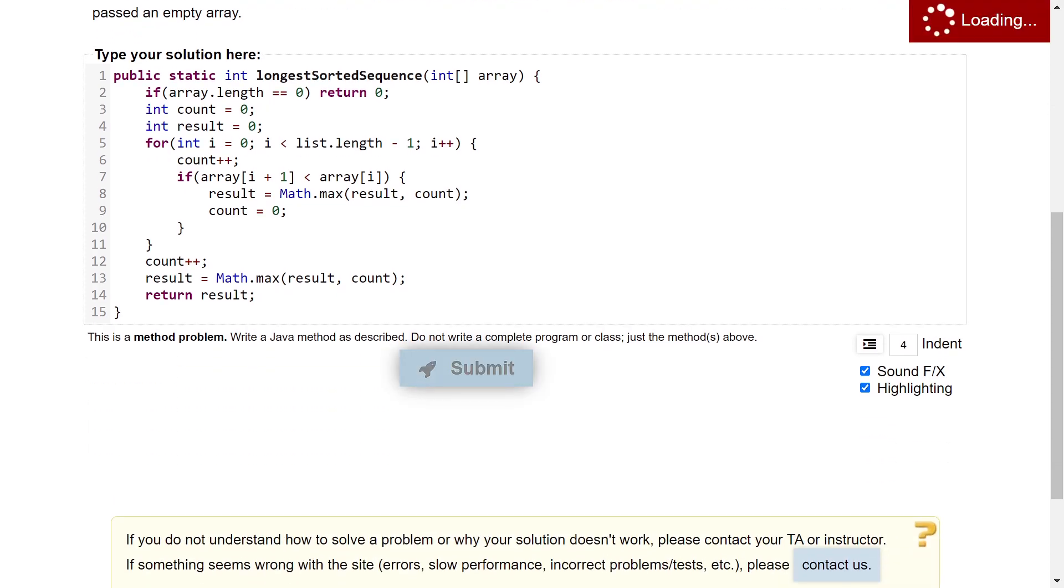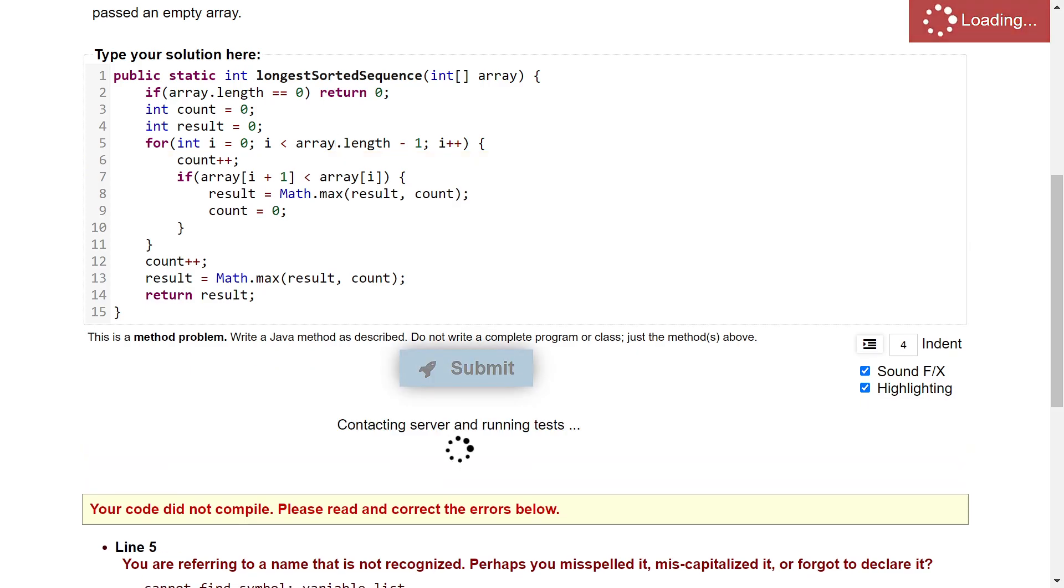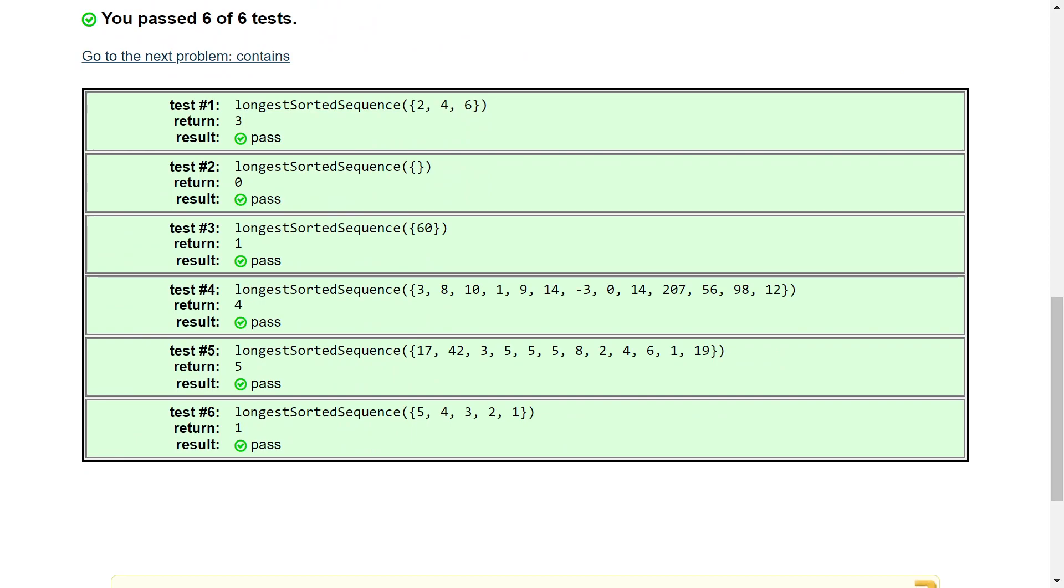And now if we press result, you should see that oops, looks like I used the variable list when we should have been using array. So let's go ahead and submit one more time. And you'll notice we pass all our tests.